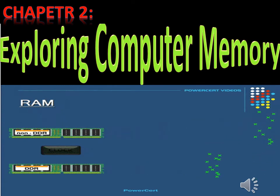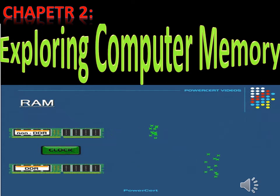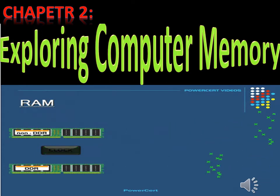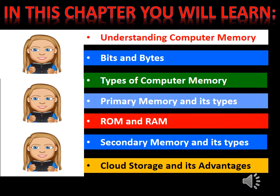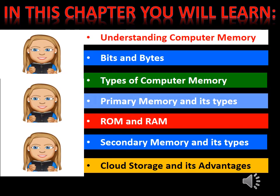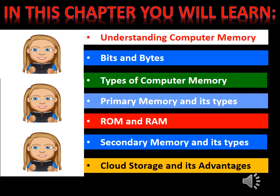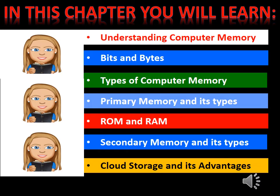Our next chapter is Exploring Computer Memory. In this chapter you will learn: understanding computer memory, bits and bytes, types of computer memory, primary memory and its types, ROM and RAM, secondary memory and its types, and cloud storage and its advantages.